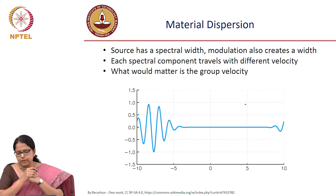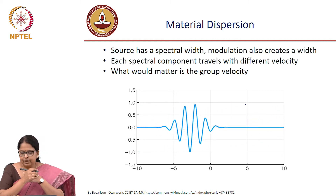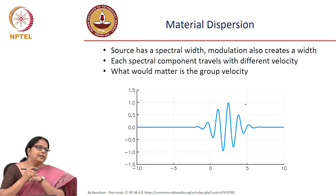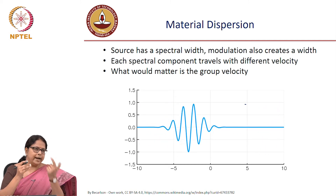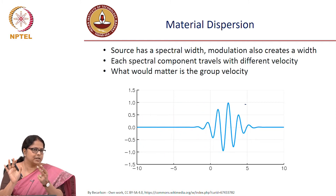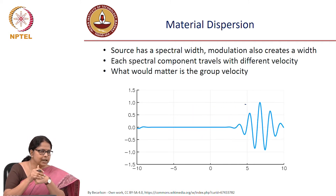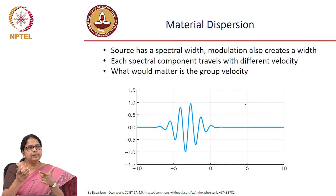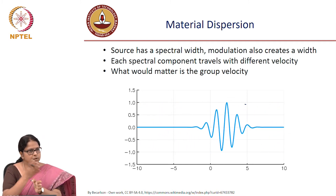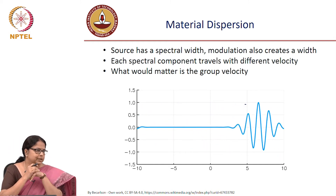When we talk about dispersion, we know the source has a spectral width and modulation also creates a width. Each spectral component will travel with different velocity and what matters is the group velocity. Two key ideas before discussing dispersion: first, we always talk about dispersion in terms of group velocity; second, spectral width is the width at the transmitter — it could be because of the source or because of modulation. Now we can talk about material dispersion.